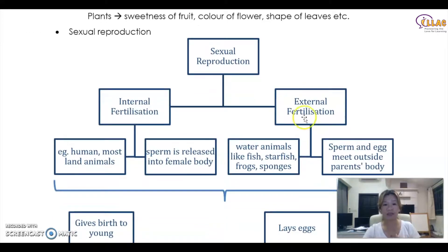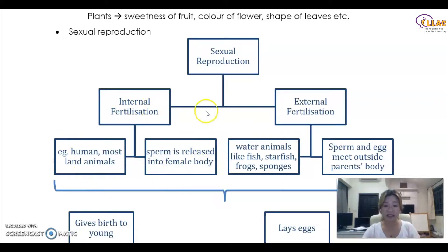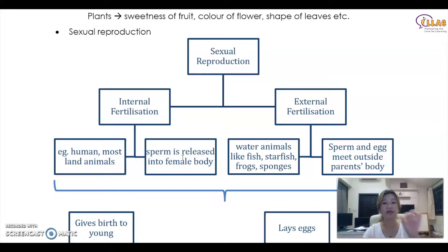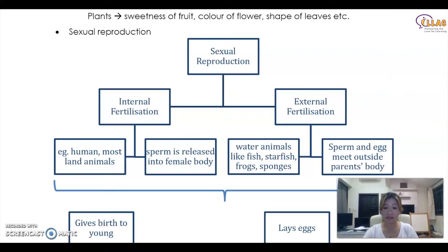How does sexual reproduction happen? There are two different types: internal fertilization and external fertilization. Internal fertilization means the sperm is released into the female's body — the male sex cell is released directly into the female body. For example, humans and most land animals do internal fertilization. External fertilization is for water animals like fish, starfish, frogs, and sponges. The sperm and egg meet outside of the parent's body.